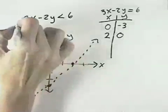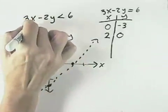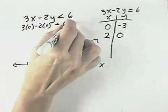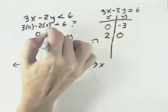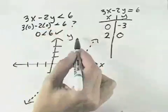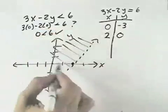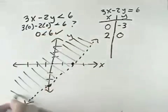I could choose a test point of 0, 0 to see if when substituting 0, 0 in, is that less than 6. And yes, 0 is less than 6, so that would tell me then that I should shade the side of the line that contained my test point of 0, 0.